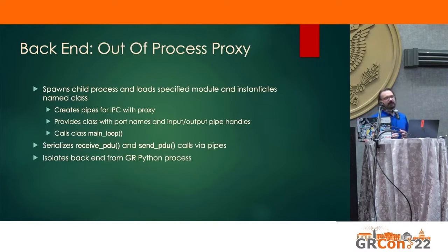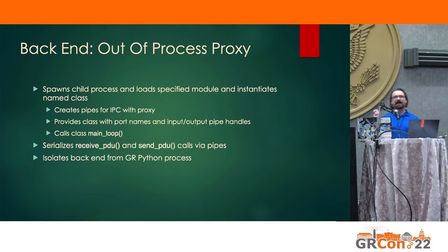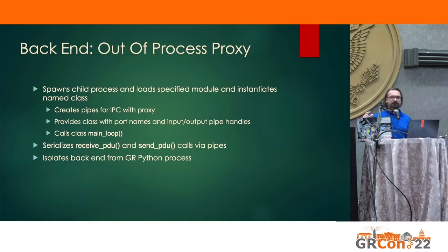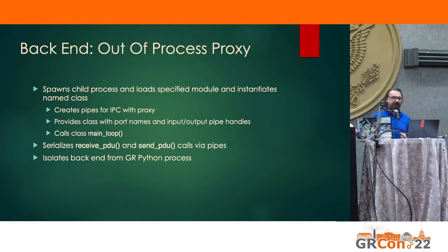There's also an out-of-process proxy, which allows the instantiated class to run in a separate process, connected to the main GNU Radio flow graph process via pipes. The calls to receive PDU and the send PDU callbacks are proxied across these pipes, so you can run your code essentially in a completely different process, further creating separation between the front-end flow graph and the back-end business logic.